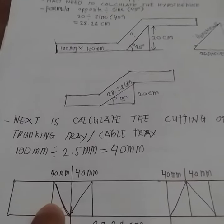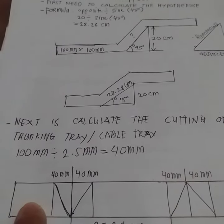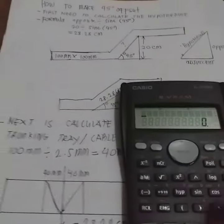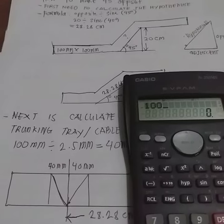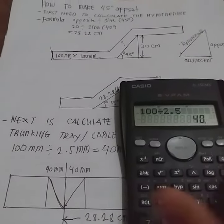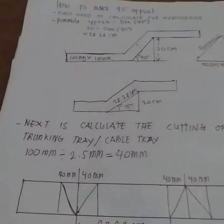So assuming that this cable tray is 100 mm in size, so we just need to divide the 100 mm by 2.5, which equals 40 mm. So we now have this cutting 40 mm and 40 mm.